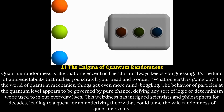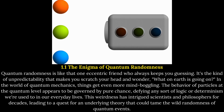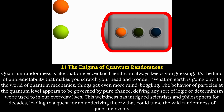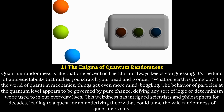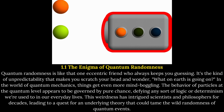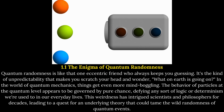Quantum randomness is like that one eccentric friend who always keeps you guessing — the kind of unpredictability that makes you scratch your head and wonder, what on earth is going on? In the world of quantum mechanics, things get even more mind-boggling. The behavior of particles at the quantum level appears to be governed by pure chance, defying any sort of logic or determinism we're used to in our everyday lives. This weirdness has intrigued scientists and philosophers for decades, leading to a quest for an underlying theory that could tame the wild randomness of quantum events.